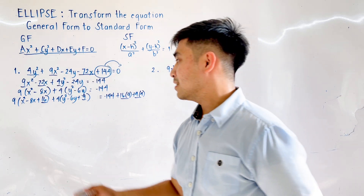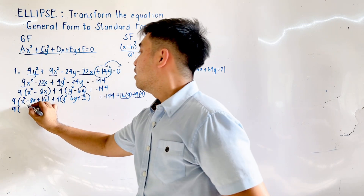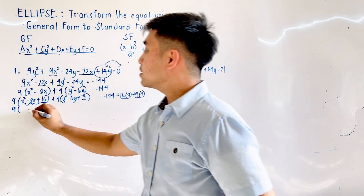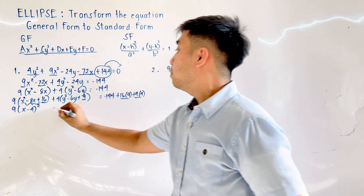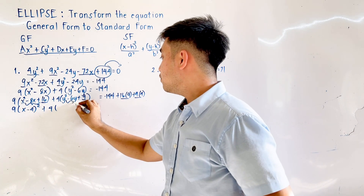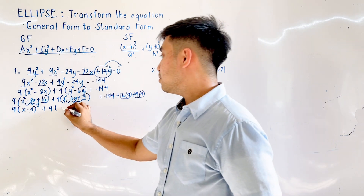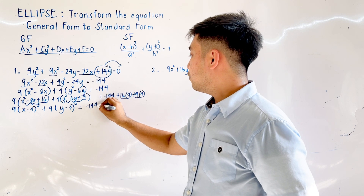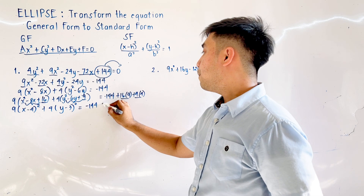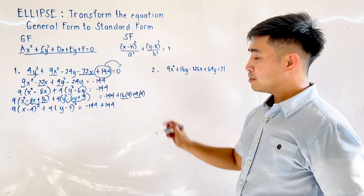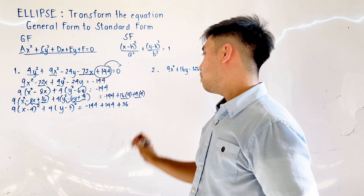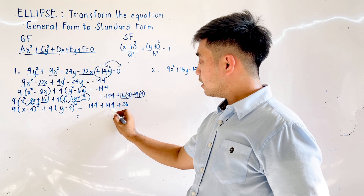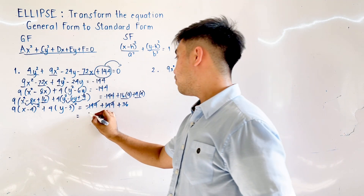Simplifying: x² − 8x + 16 is a perfect square trinomial, giving 9(x − 4)². And y² − 6y + 9 factors to 4(y − 3)². The right side becomes: −144 + 144 + 36. The −144 and +144 cancel out, leaving 36.